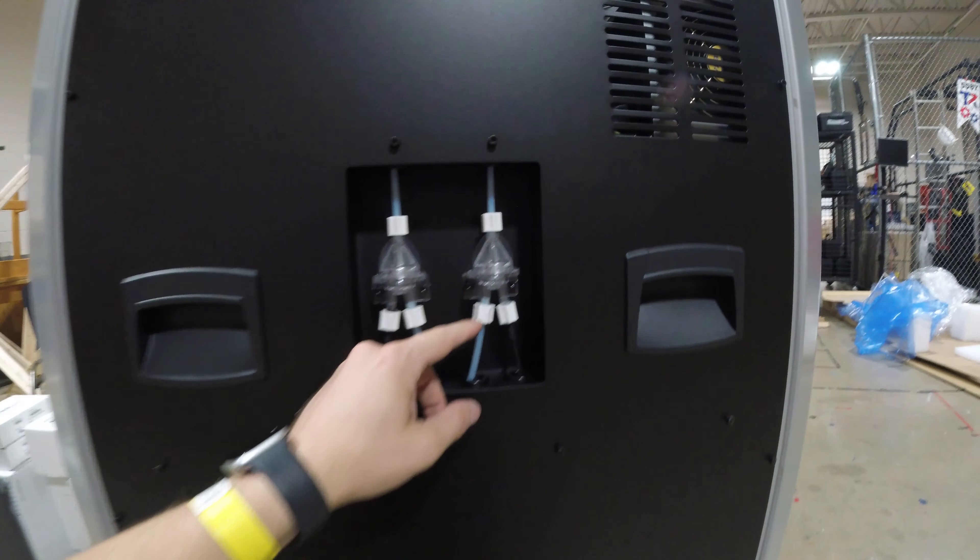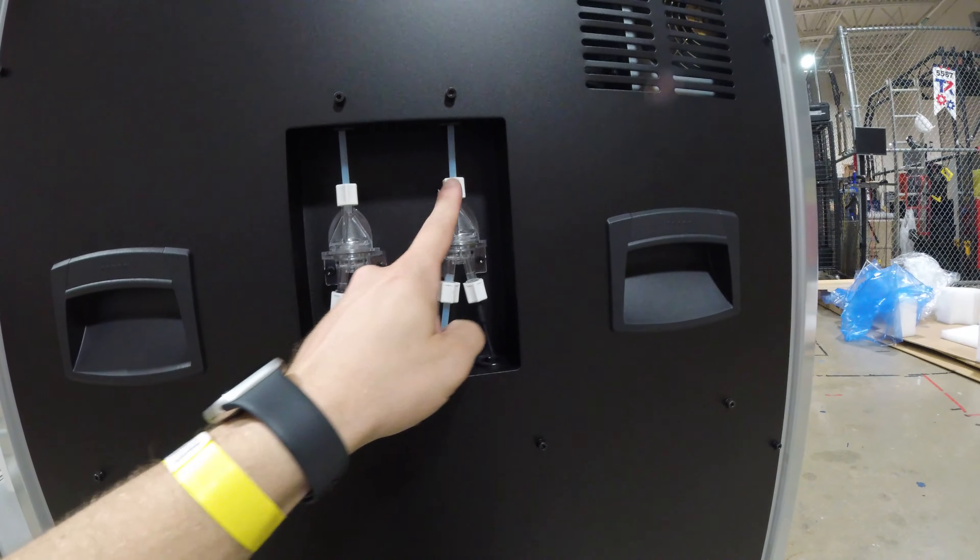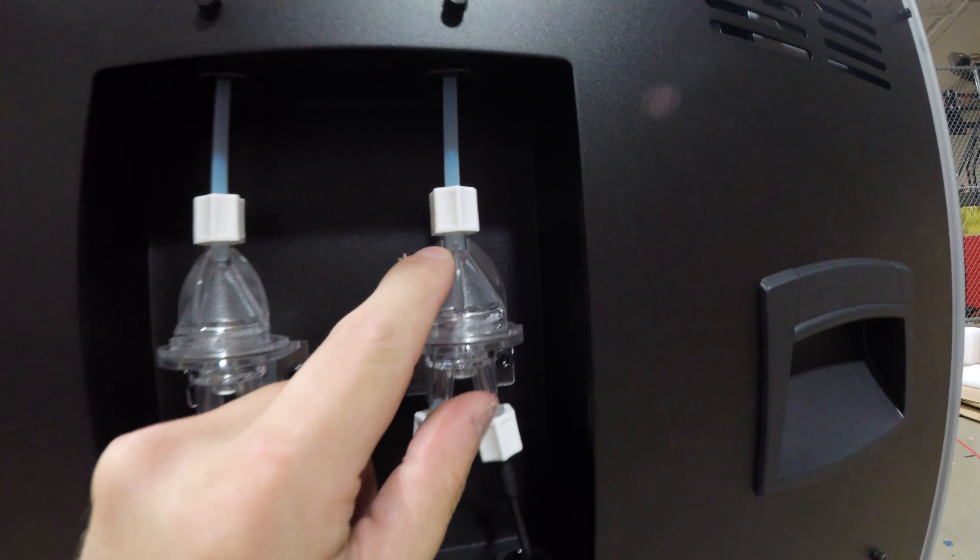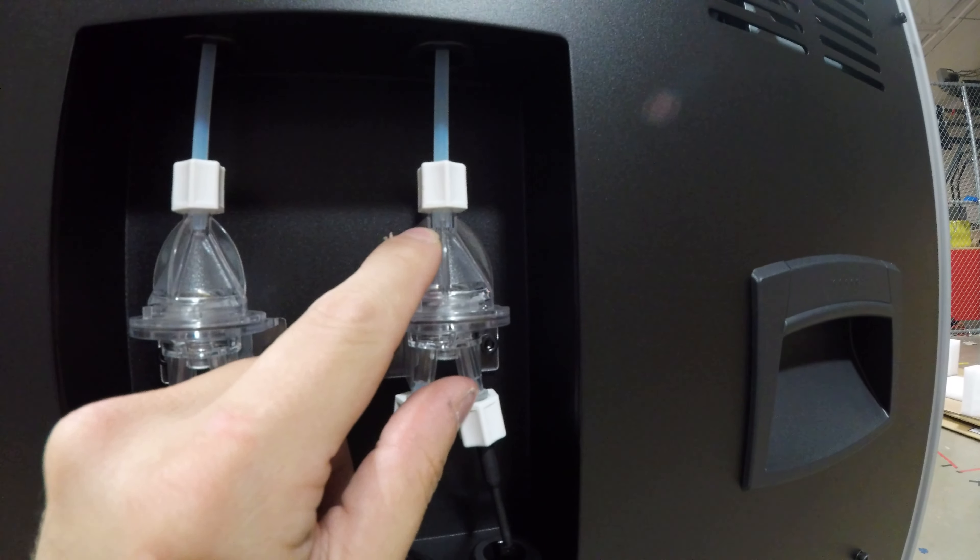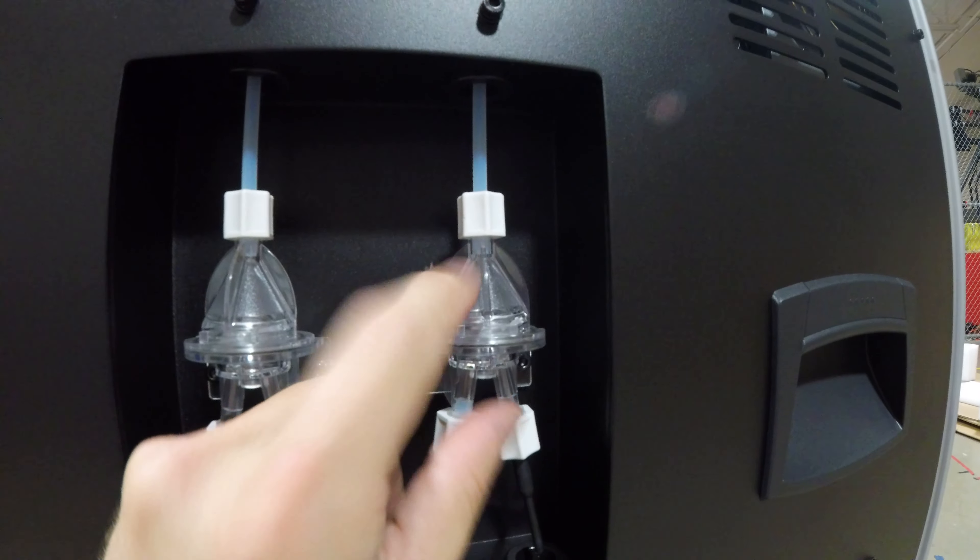What happens is when this comes in on an angle and then gets straightened up here, you end up having some wear and the circle that's inside of here will actually turn into an oval.